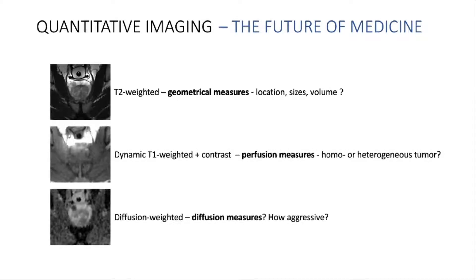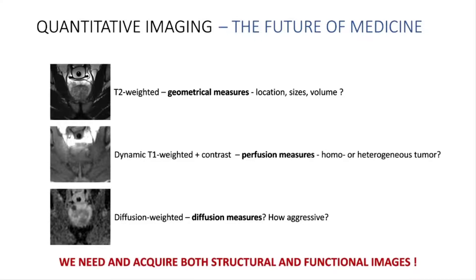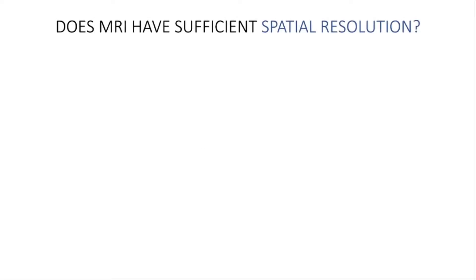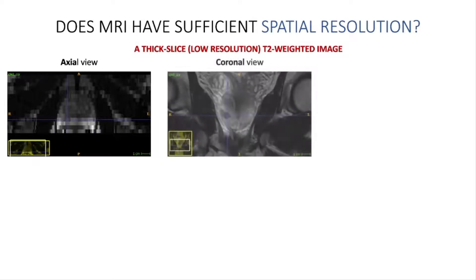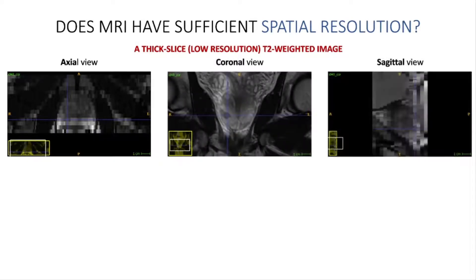With modern magnetic resonance imaging techniques, we can get insight into both structural and functional properties of tissues. However, do these images have sufficient spatial resolution, which is the key property of image quality? To date, many 3D images are collected as stacks of thick slices, leading to the deterioration of both image quality and the accuracy of extracted measures.